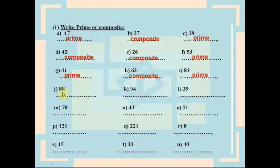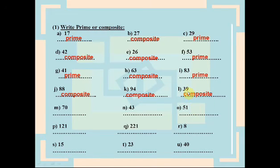88 is an even number, so it is composite. 94 is also an even number, so it is composite. 39 is a composite number — it is divisible by 3 and 13, so it has more than two factors. 70 is an even number, so it is composite.